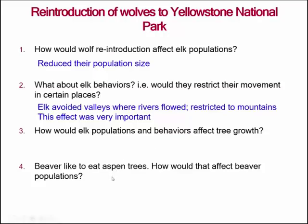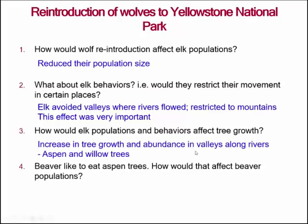How did the change in elk populations and behaviors affect tree growth? We saw that because elk populations had reduced and were now restricted to certain areas of the mountains and not so much in the valleys, the tree growth and the abundance of trees along the valleys and rivers increased — particularly trees like aspen and willow really increased in their size and abundance.